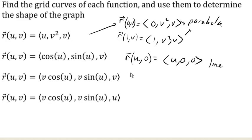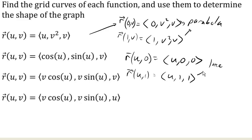Likewise, if we do r of (u, 1), we get (u, 1, 1). This one is also a line, in this case where y and z are both 1 and x can vary.